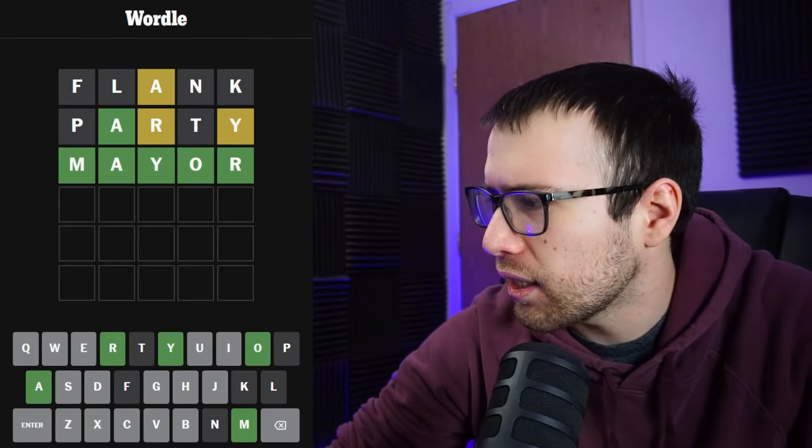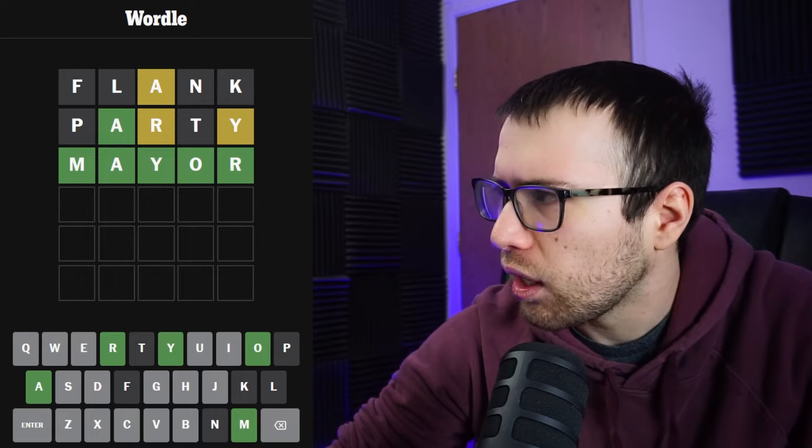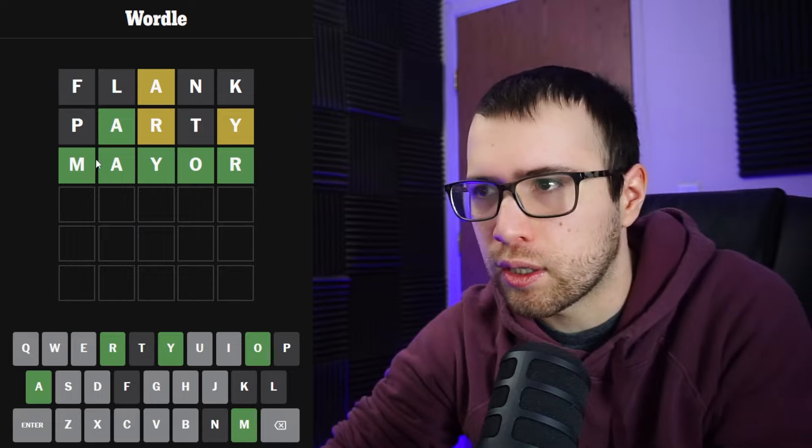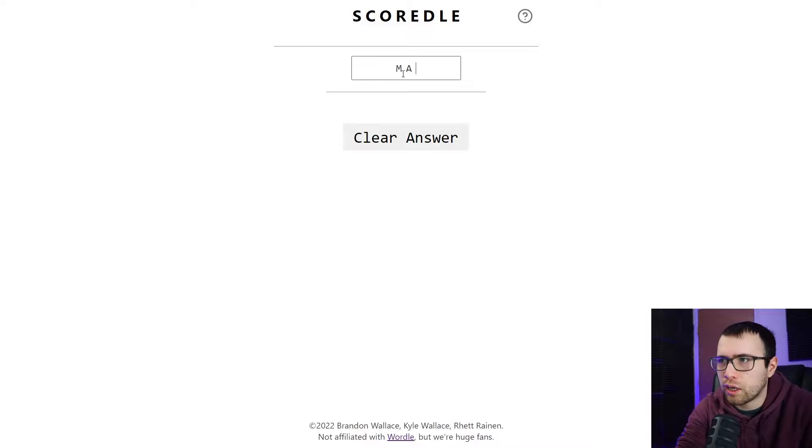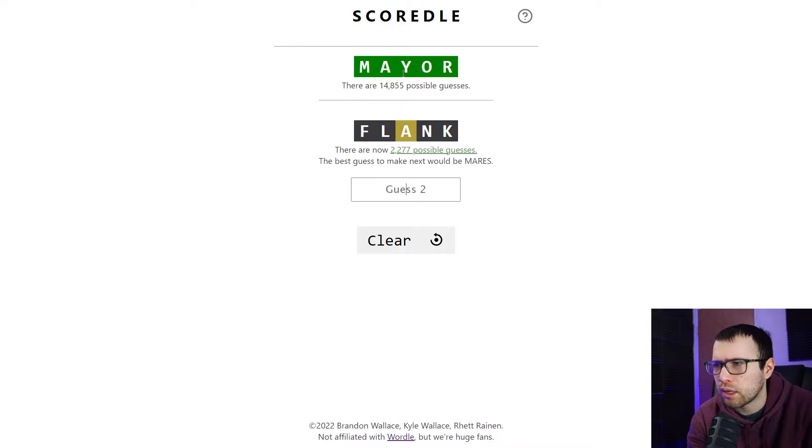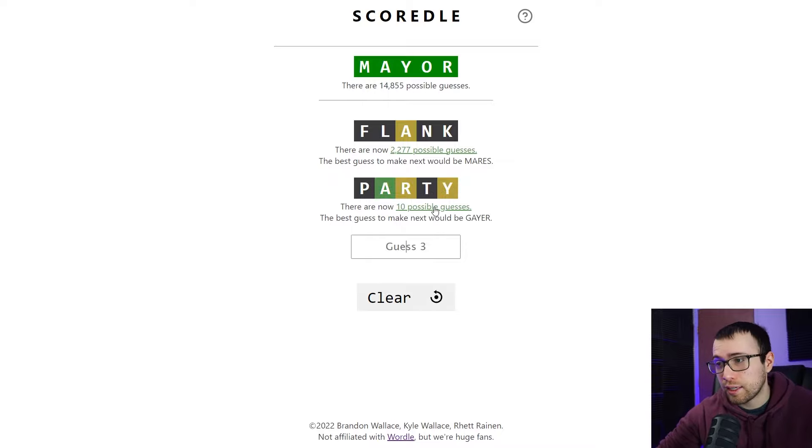I want to check out Squirtle for this one, because getting it in three like that... I mean, having the Y not be in the fifth position narrowed things down quite a bit. But I have to imagine there might have still been other possibilities. Like I said, LAYER and PAYER could have been available if those letters were there, but they weren't.